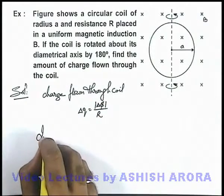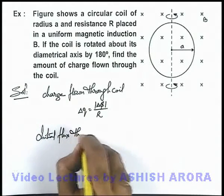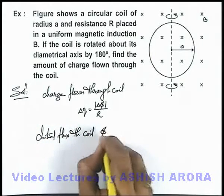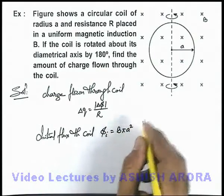If we calculate the initial flux through the coil, this initial flux can be given as Bπa², as it is B·A.